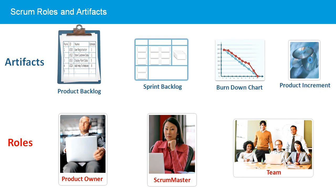The team is a cross-functional, self-organizing group that is responsible for delivering potentially shippable product increments at the end of each sprint. The team helps break down the items in the product backlog into manageable user stories that can be accomplished in a single sprint. During planning, the highest priority items are moved from the product backlog into the sprint backlog to indicate what will be delivered in the next product increment. The team then commits to the items in the sprint backlog and begins development.